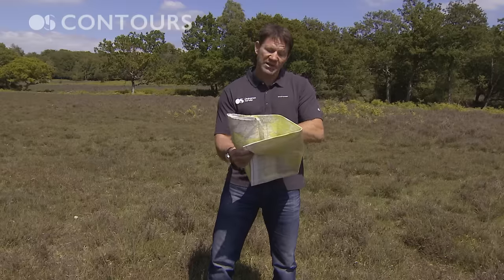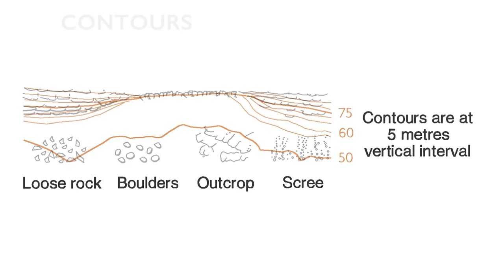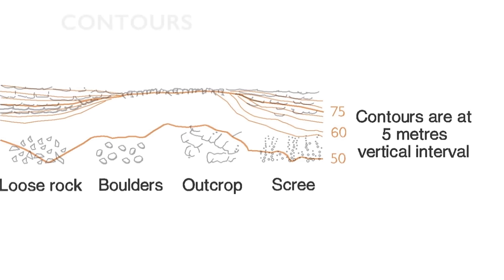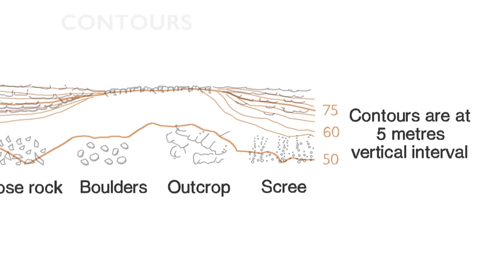The difference between contour lines is going to be five meters or ten meters, and you can tell that by looking at the legend on your map.